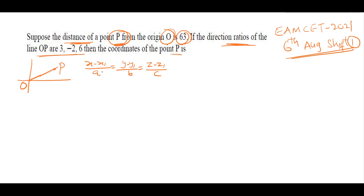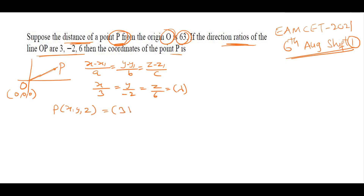Using the line equation x/a = y/b = z/c = λ, the parametric point on the line is P = (3λ, −2λ, 6λ). The distance from origin to P is given as OP = 63.